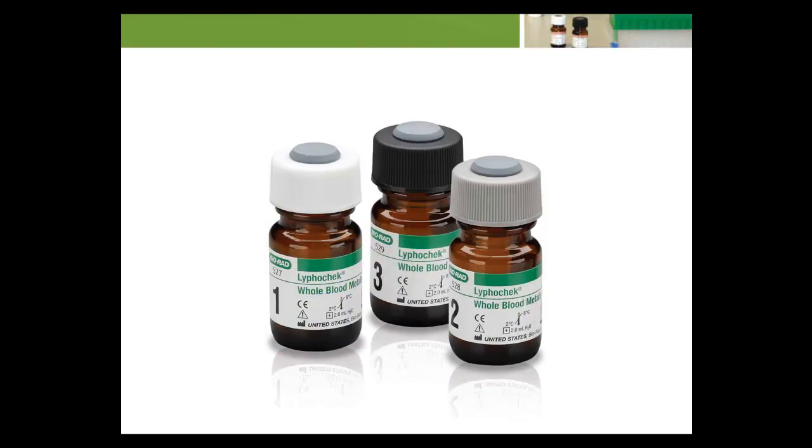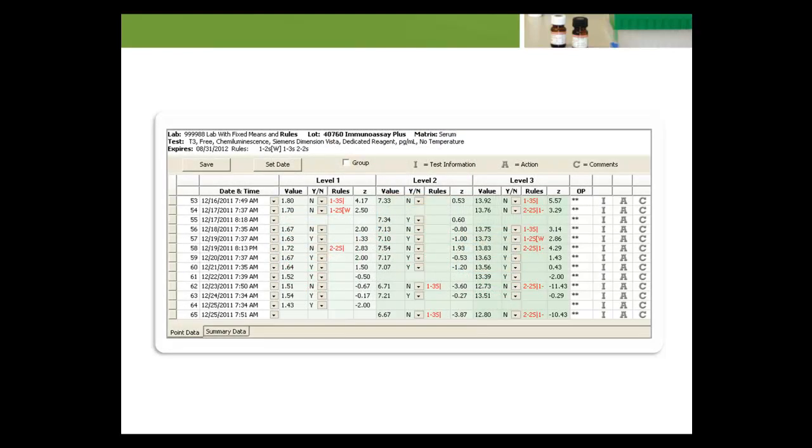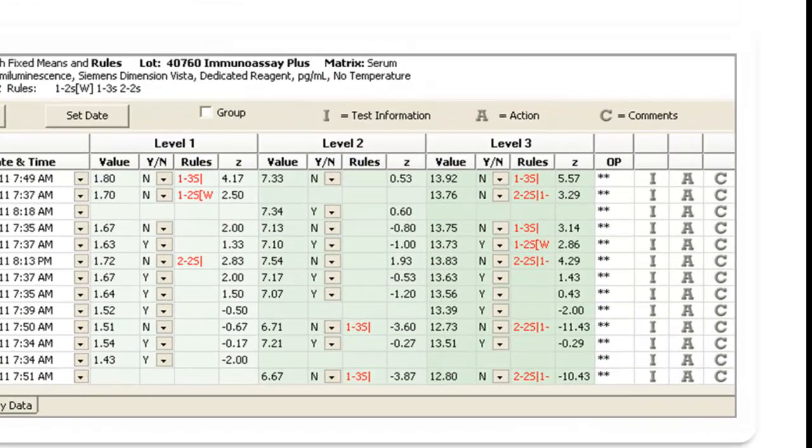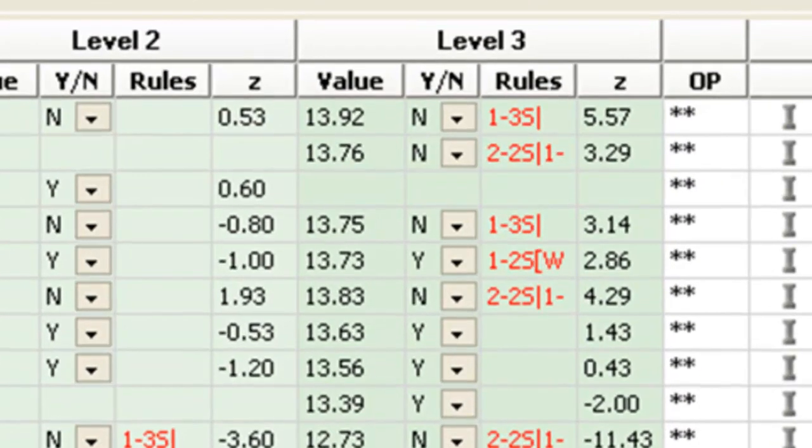The primary tool used by laboratories to perform routine QC is the periodic testing of QC specimens, which are manufactured to provide a stable analyte concentration with a long shelf life. A laboratory establishes the target concentrations and analytic imprecision for the analytes in the control specimen assayed on their instruments. Thereafter, the laboratory periodically tests the control specimens and applies QC rules to the control specimen results to make a decision about whether the instrument is operating as intended or whether an out-of-control error condition has occurred.